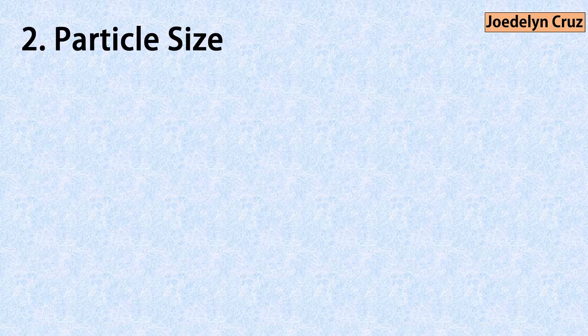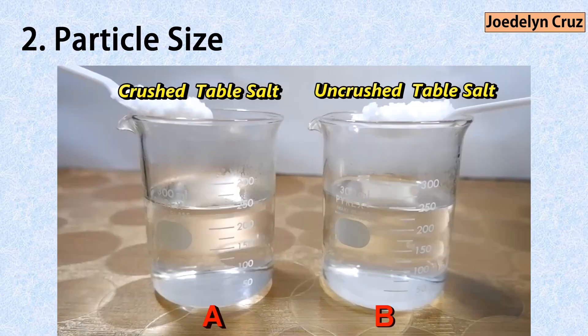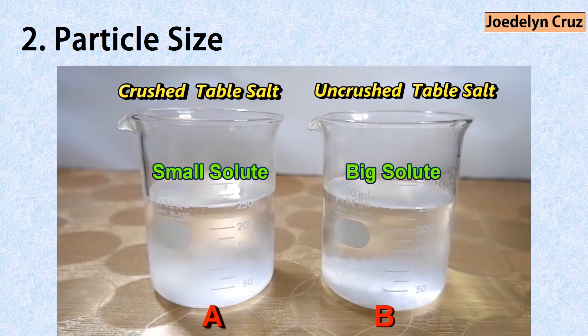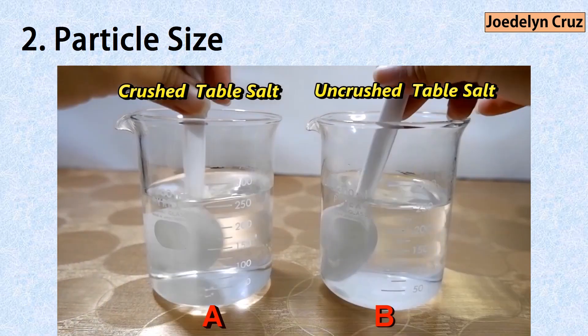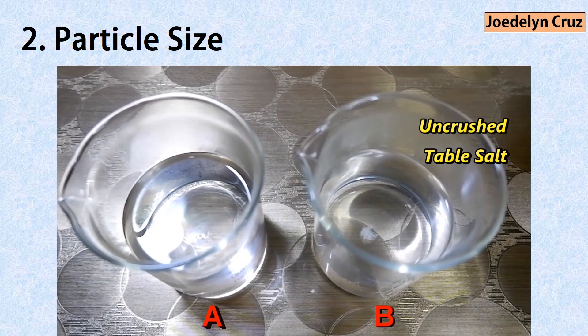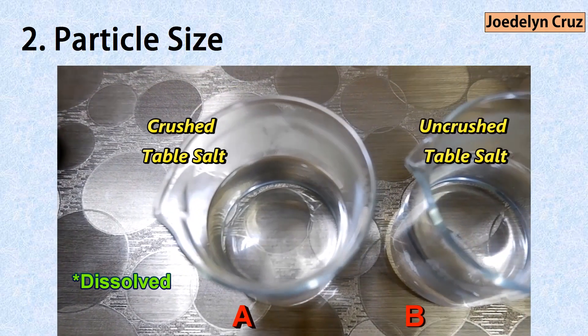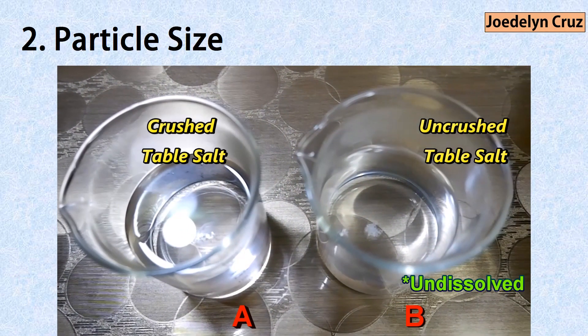Particle size: The size of solute particles affects solubility. In this experiment, the crushed table salt is put in beaker A and the uncrushed table salt is put in beaker B. The particles of crushed salt in beaker A are smaller than the particles of uncrushed salt in beaker B. All of the salt crystals in solution A dissolve in water, while there is still a small amount of undissolved salt in solution B.